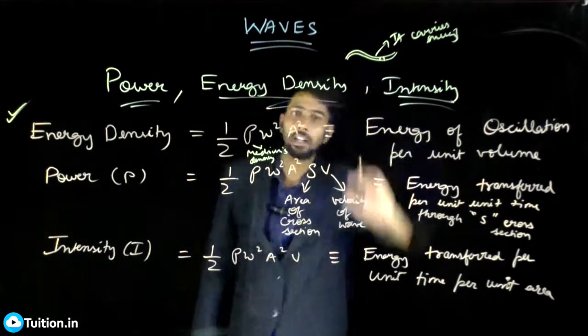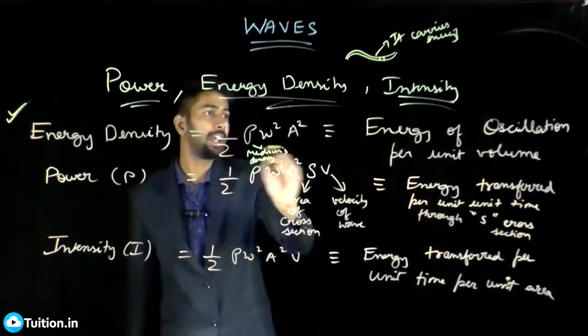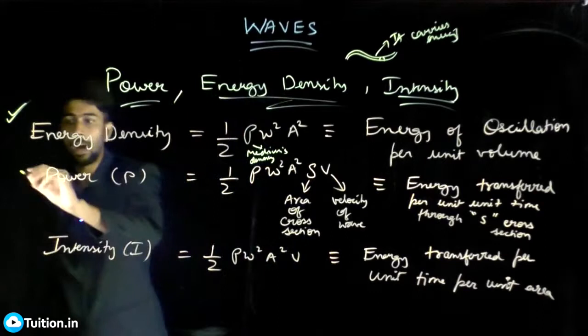Like how far the particles are going up and down if it is a transverse wave. Half rho omega square a square is the energy of oscillation per unit volume. Second is your power.